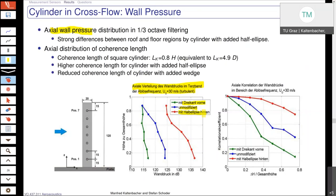When we look at this case, the wall pressure sensor signals — the amplitudes — are almost the same over the whole height for the case of the triangle attached in front of the cylinder — upstream — at about 115 dB wall pressure. In blue, the unmodified case, we already have a stronger deviation between the sound pressure measured at the top and at the bottom. And the strongest deviation and the highest amplitudes we see for this half ellipse attached in downstream direction.